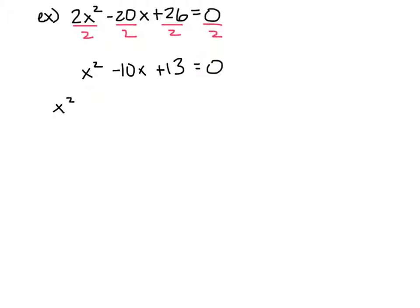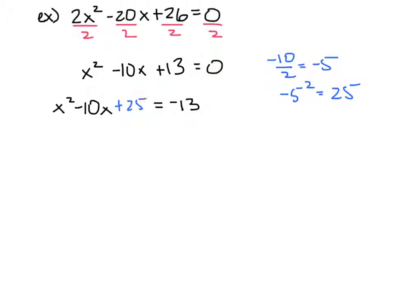I need x squared minus 10x by itself, so I move the 13 to the other side: x squared minus 10x equals negative 13, leaving a space. To complete the square, I take negative 10 divided by 2 to get negative 5, then square it: negative 5 squared is 25. I add 25 to both sides. Since x squared minus 10x plus 25 is a perfect square trinomial with the factor negative 5, this becomes x minus 5 squared equals 12.